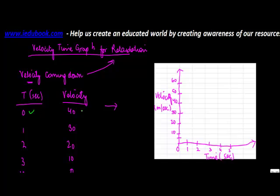So when the time is 0 seconds the velocity is 40. So time is 0 here at this point the velocity is 40. When the time increases to 1, velocity comes down to 30. So time is 1, velocity is 30 which is here. So you draw a line till here. So this is the second point.